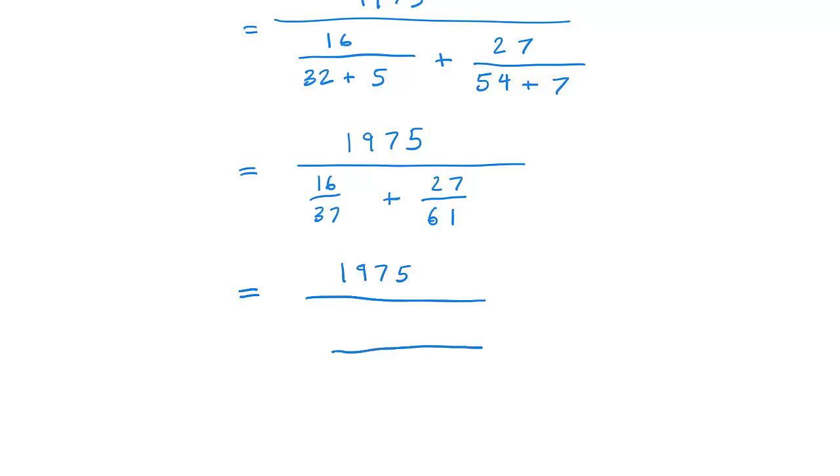The whole denominator will become 37 times 61. And in the numerator, we would get 61 times 16 plus 27 times 37.